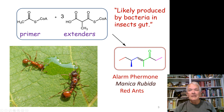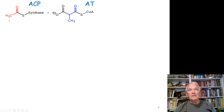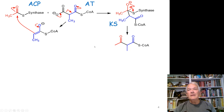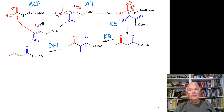We're going to prime with our normal acetyl group, and here's our first extender. We start off as before: we lose CO2, we form our enolate, we attack to form our tetrahedral intermediate which gives us the first ketone. Then we go through all the initial steps somewhat normally — we reduce the ketone, we do the dehydration, we reduce the double bond to the hydrocarbon. This is kind of normal except for that methyl group, because we're using methylmalonate.